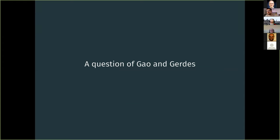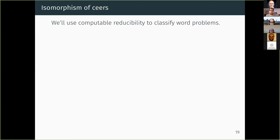Uri and Andrea proved a lot of results about this poset. We have this distinction between a light side, which is way more well-behaved, and the dark side. There are plenty of minimal dark elements over the finite ones. Now let me move to the question of Gao and Gerdes, which essentially connects the world of word problems with the world of ceers.